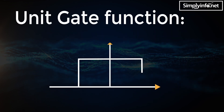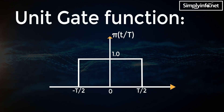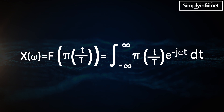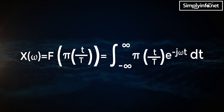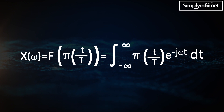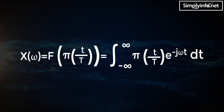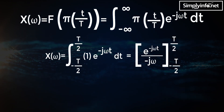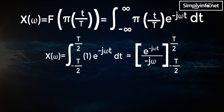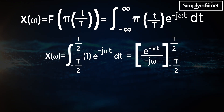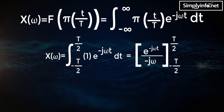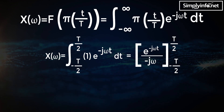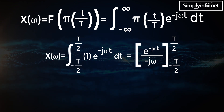Unit gate function. X(ω) = F{π(t/τ)} = integral from minus infinity to infinity of π(t/τ) times e^(−jωt) dt. This simplifies to the integral from −τ/2 to τ/2 of 1 times e^(−jωt) dt, which evaluates to [e^(−jωt) / (−jω)] with limits from −τ/2 to τ/2.